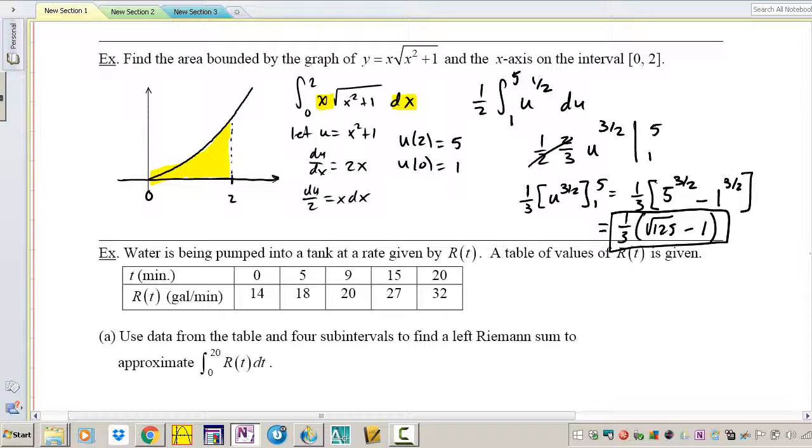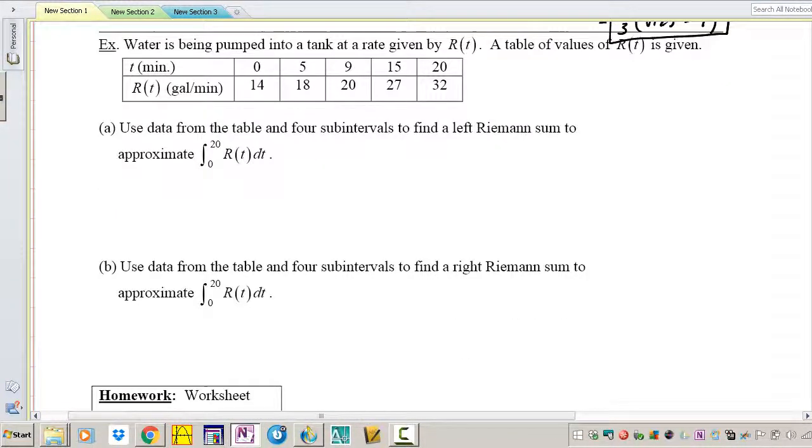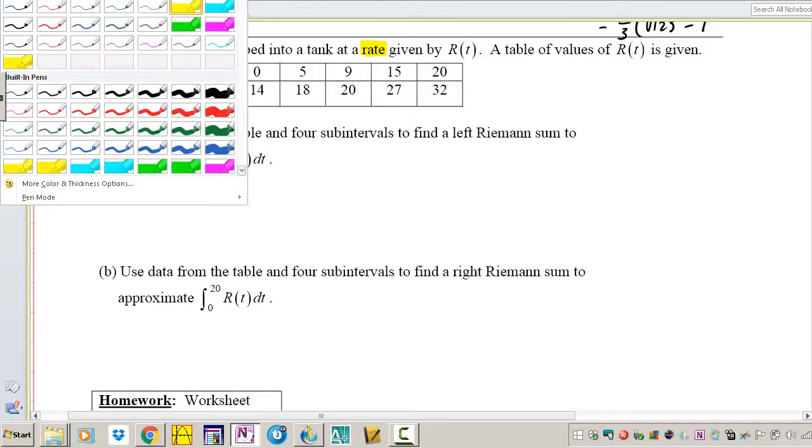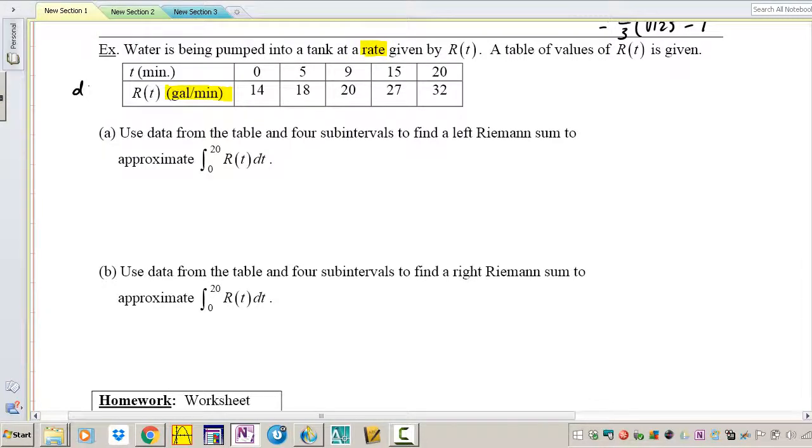Last example, water is being pumped into a tank at a rate given by R(t). So R(t) represents a rate, and what is rate in calculus? Rate is a derivative, so let's just call it dR/dt. That is a derivative. A table of values of R(t) is given, so here's a table.